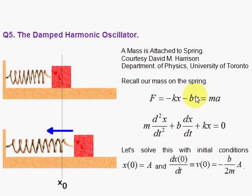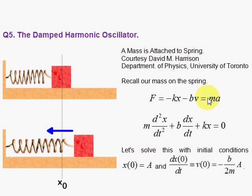Friction always works against you. If the velocity is positive — if you're moving to the right — friction is working against you; the frictional force is to the left. If you're moving to the left, in the negative direction, so your velocity is negative, two negatives will cancel and the frictional force will be to the right. Newton's second law says sum up all the forces algebraically — this is a one-dimensional problem — and set it equal to mA. F equals mA, Newton's second law. Here x is a function of time; the velocity is the first derivative of x with respect to time, and the acceleration is the second derivative of x with respect to time, so we have a differential equation.